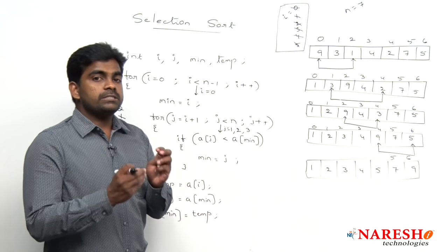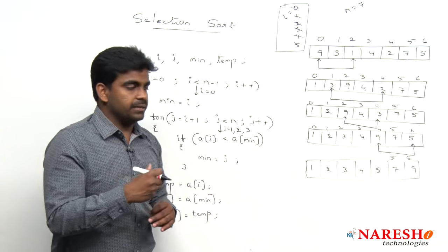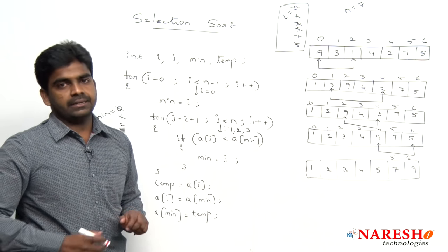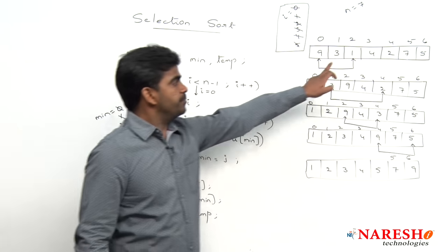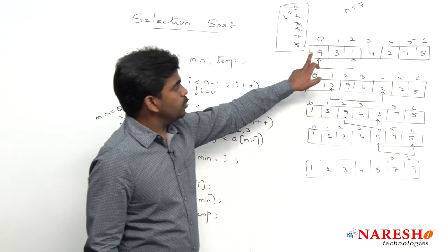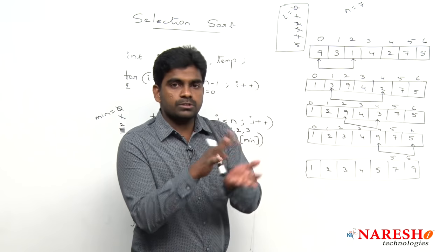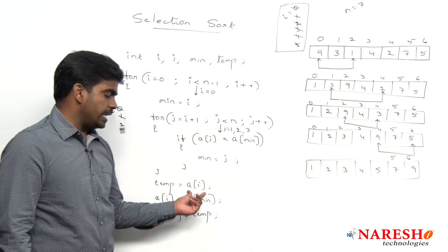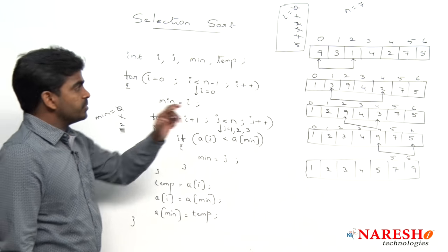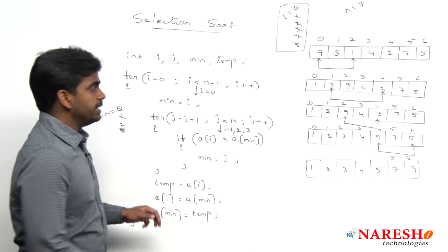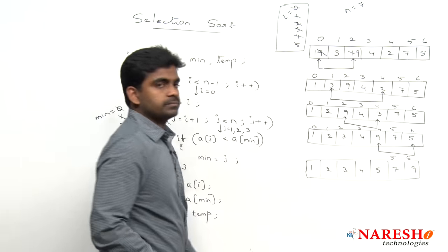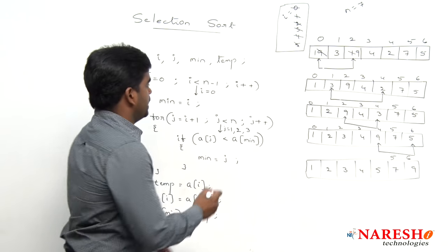Once the minimum element is found, its location is 2. We swap the minimum location element with the index element a[i], where i is 0. Using a temp variable: we store a[i] — that is 9 — into temp. Then a[min], which is a[2] = 1, is stored into a[i]. Then 9 from temp is stored into a[min]. So 1 comes to index 0 and 9 moves to index 2.